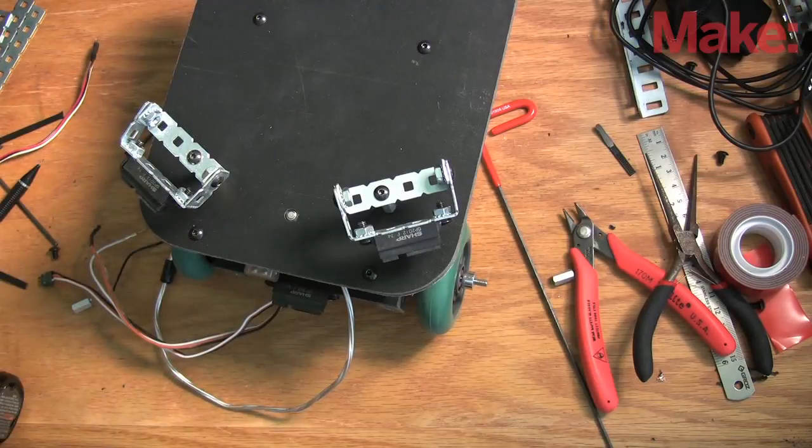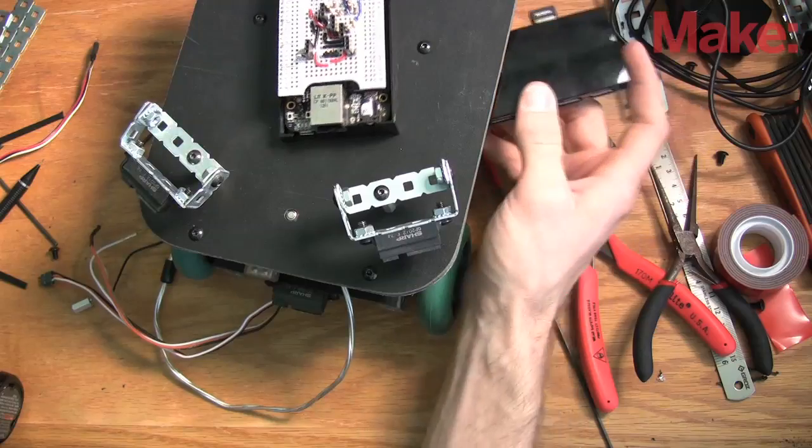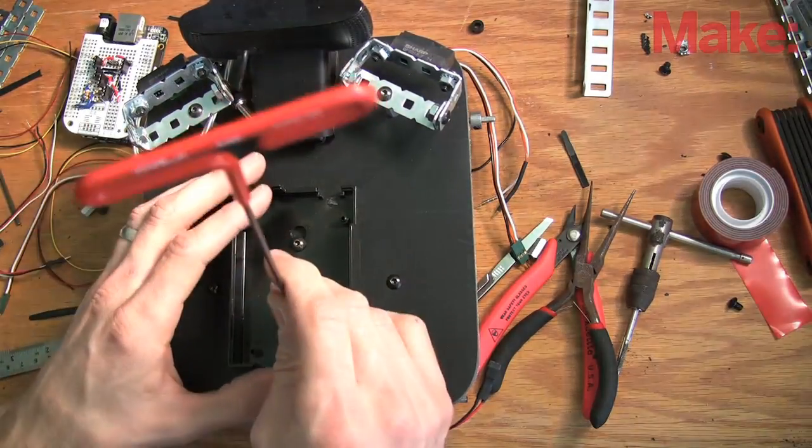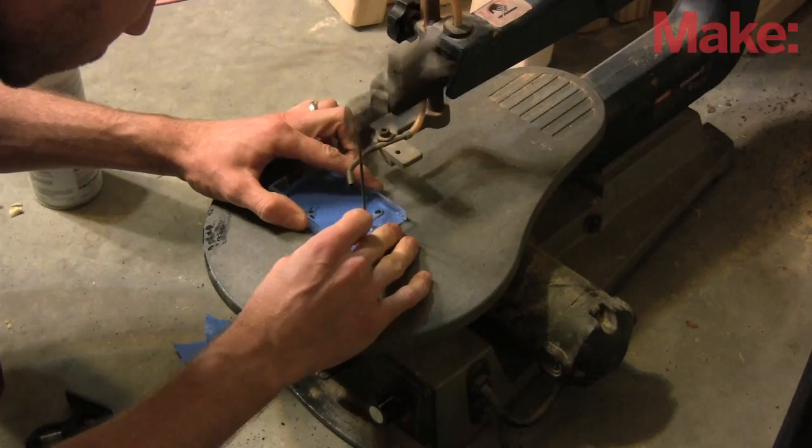Because the BeagleBone only has one USB port, I need a hub to connect both the webcam and the WiFi dongle. The BeagleBone Black will write on top in a plastic case. I cut a hole in the top of the case to allow connections to be made.